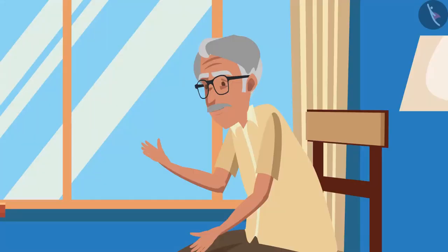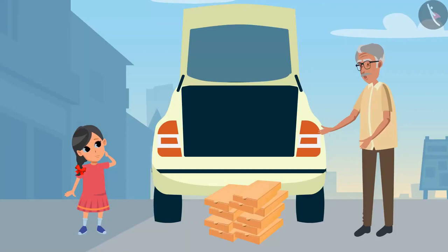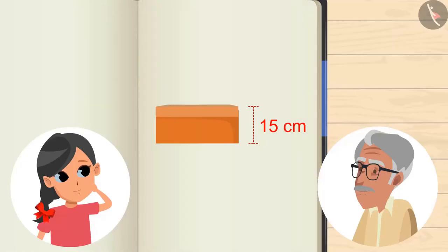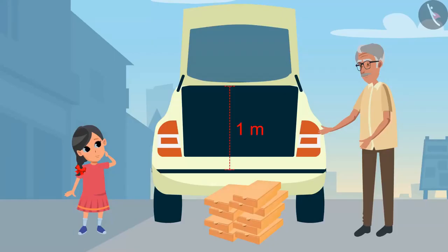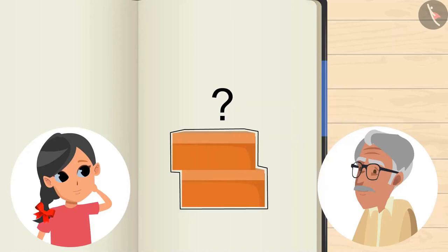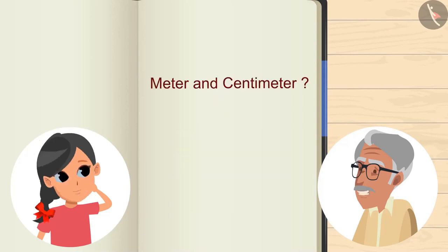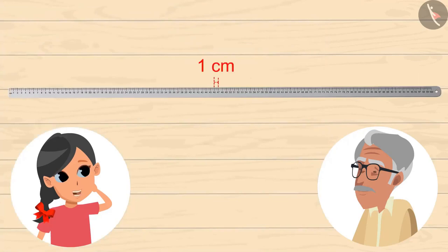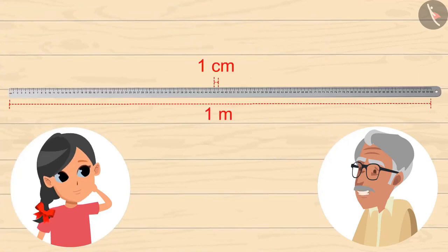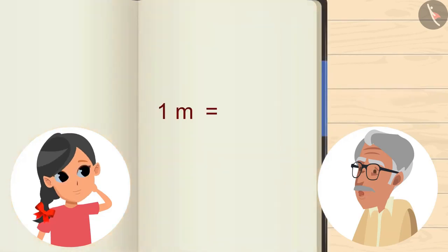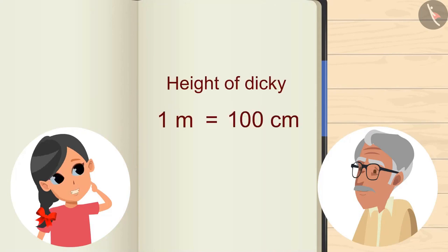Before eating the mangoes, tell me one thing. We have to place these 10 boxes in the car's dicky. Height of each box is 15 centimeters and height of the dicky is 1 meter. So, how many boxes can be stacked on top of each other? Grandpa, what is meter and centimeter? These are measuring units. This is 1 centimeter — it is very small. And this is 1 meter — it is very large. Yes, 1 meter means 100 centimeters. So, height of dicky is 1 meter, that is 100 centimeters.